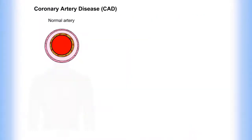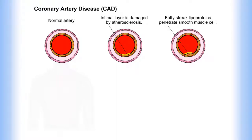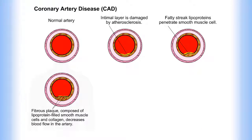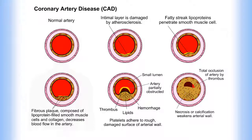Coronary artery disease. Here we see a normal artery. The intimal layer is damaged by atherosclerosis. Fatty streak lipoproteins penetrate smooth muscle cells. Fibrous plaque, composed of lipoprotein-filled smooth muscle cells and collagen, decreases blood flow in the artery. Platelets adhere to the rough, damaged surface of the arterial wall, and necrosis or calcification weakens the arterial wall.